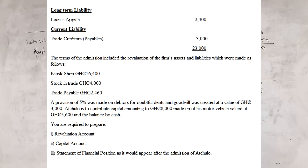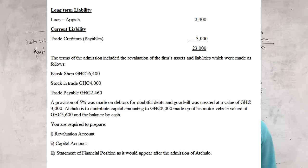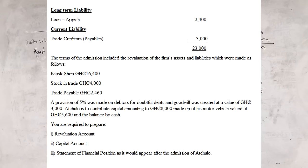The terms of admission included revaluation of assets and liabilities as follows: kiosk shop revalued upwards to GH¢16,400; stock in trade is now GH¢4,000; trade creditors now GH¢2,460. A provision of 5% was made on receivables for doubtful debts. Goodwill was created at a value of GH¢3,000. Achulo is to contribute capital of GH¢8,000, made up of a motor vehicle valued at GH¢5,600 and the balance by cash. We are required to prepare: (I) revaluation account, (II) capital accounts, and (III) statement of financial position after admission of Achulo.